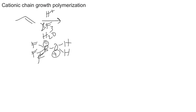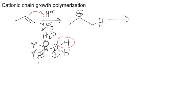That complex will release one of these protons, so what we get is this electron pair coming out to grab a proton — just like always — to give us the more substituted carbocation, with an H added. This is the initiation step.